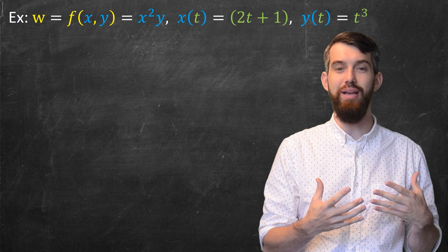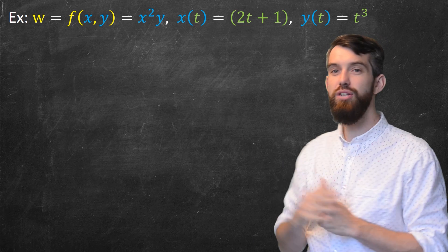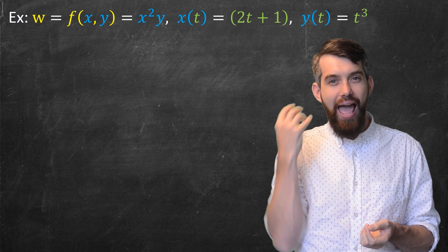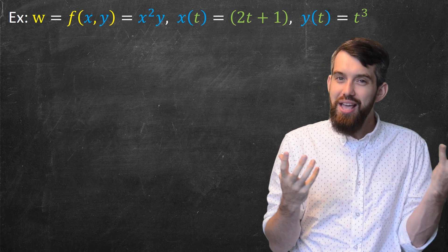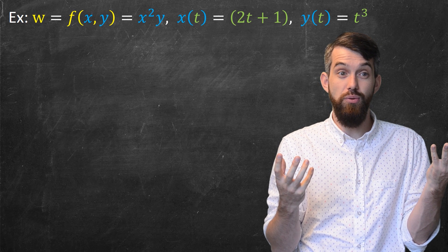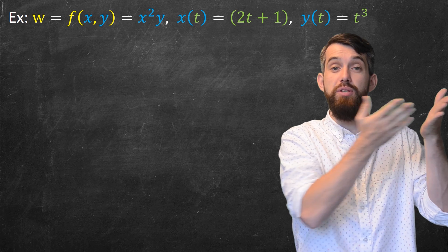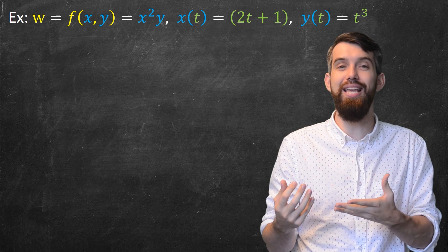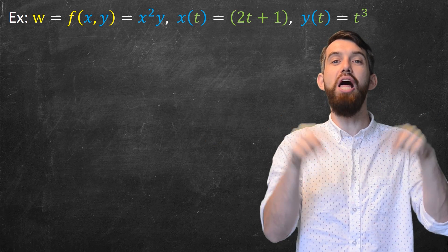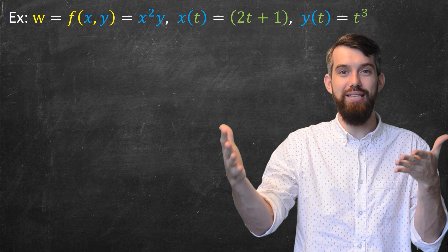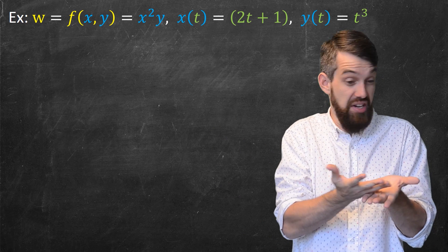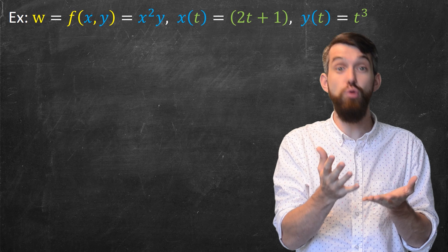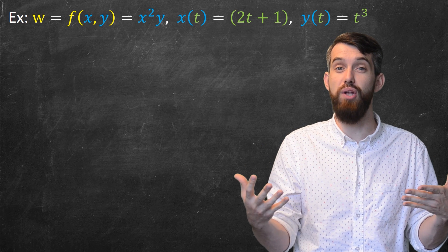The final thing we want to do in this video is work through an explicit example. Here the function f of xy is x squared times y, where x is a function of t given by 2t plus 1, and y is a function of t given by t cubed. So w depends on x and y, and both of those depend on t. One thing you could do is plug in those values of t, get a long expression entirely in terms of t, and then differentiate. However, we want to practice doing this by the chain rule.